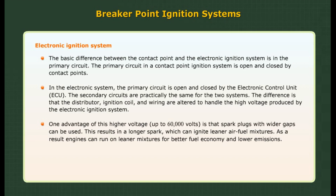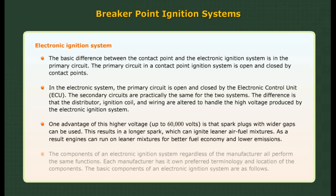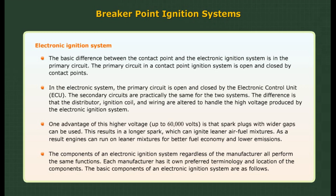One advantage of the higher voltage — up to 60,000 volts — is that spark plugs with wider gaps can be used. This results in a longer spark which can ignite leaner air-fuel mixtures. As a result, engines can run on leaner mixtures for better fuel economy and lower emissions. The components of an electronic ignition system, regardless of the manufacturer, all perform the same functions, though each manufacturer has its own preferred terminology and component locations.